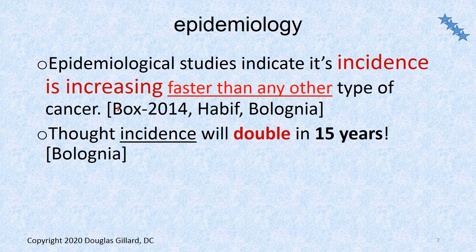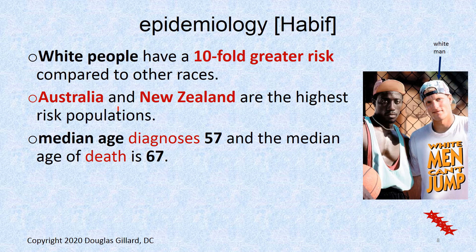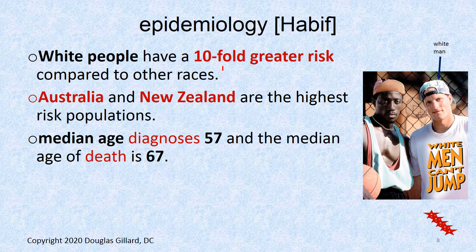The incidence is thought to double every 15 years. White people have a tenfold greater risk compared to other races. We'll look at subungual melanoma which does favor Black people more, but in general the superficial spreading and nodular types are more a white-people disease — the skin simply isn't as protected. We talked about how melanocytes make melanin to shield the cells, so those with less melanin are at much greater risk.